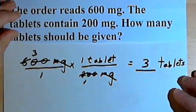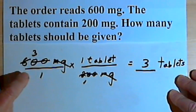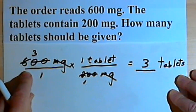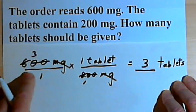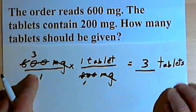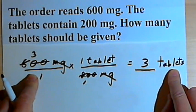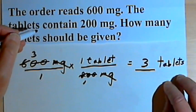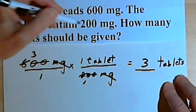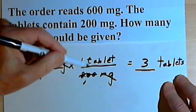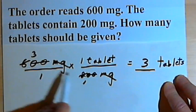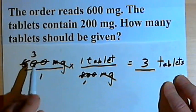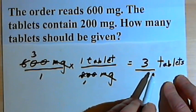So basically what I did when I set this up was write on the left side the amount that was ordered. That was the 600 milligrams. On the right side of the equation, I wrote the units that I was dealing with, tablets. I took the remaining information, the one tablet contains 200 milligrams, made a fraction, and then before multiplying, I cancelled out whatever I could. Then I multiplied across and ended up with my answer.